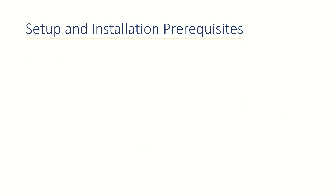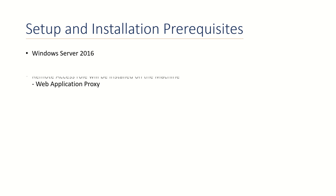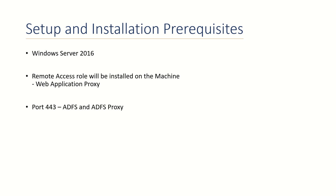Let's talk about the setup and installation prerequisites for this lab. I'm going to use a Windows Server 2016 machine, and the role I will be installing is the remote access role. The sub-option I will be selecting is web application proxy. Now, port 443 has to be open between ADFS and ADFS proxy for both inbound and outbound connectivity.